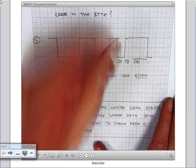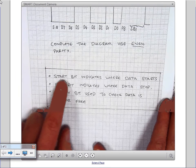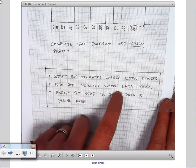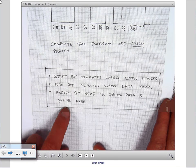So to summarize, the start bit indicates where the data starts, the stop bit indicates where the data stops, and the parity bit is used to check whether the data is error-free.